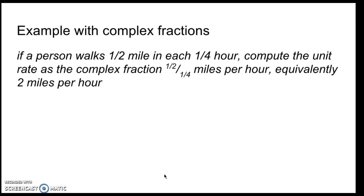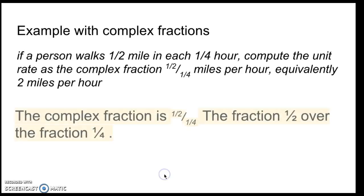How about an example with complex fractions? This was in our standard up front. So, if a person walks a half mile in each quarter hour, compute the unit rate as a complex fraction, 1 half over 1 fourth miles per hour, or equivalently, 2 miles an hour.